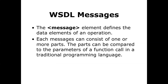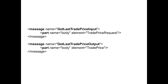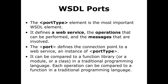The next component is messages. Messages represent the actual data we are going to send. For sending the message, the tag is 'message' and you can give it a name. Inside the message, there is a tag called 'part'. I have given a part name as 'body' and the element name as 'trade price request', so whatever data is in the trade price request is the actual message.